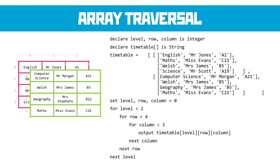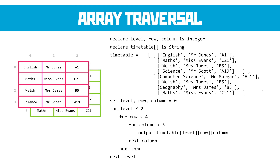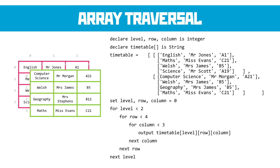Going three-dimensional means working with different versions of the same table — in this example, different days of a timetable. We need another loop for the level, placed before the row and column loops. We go through the first level first, then through each row and column exactly as in the 2D array. When we finish that level we increment the level value and work through the next one. Don't forget that all of this is zero-indexed — zero is the first item — but these algorithms are reasonably straightforward to build.